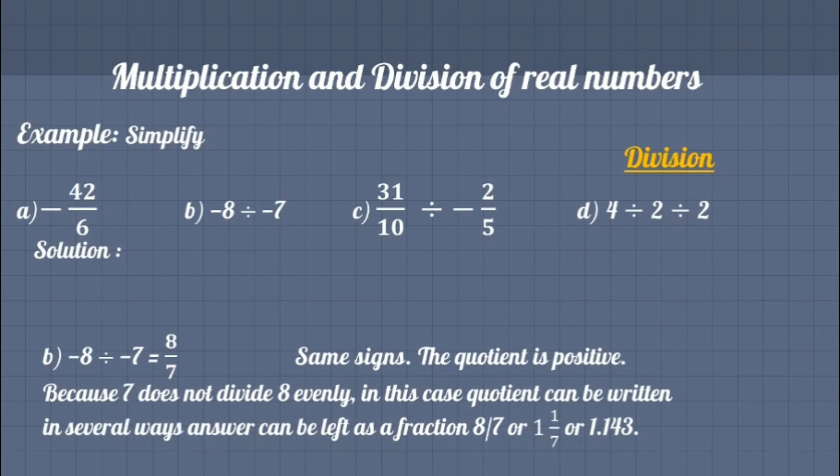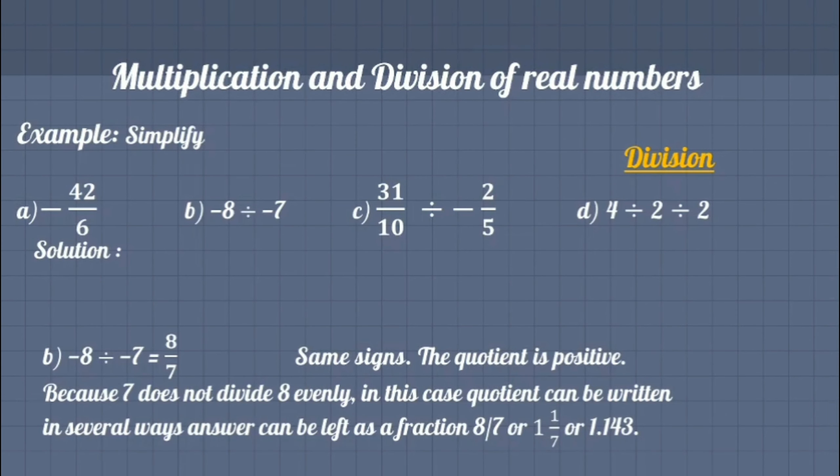If divisor does not divide evenly, in this case we have several options to write the quotient: leave the lowest simplified fraction as it is, or make mixed fraction, or simply write the answer in decimal place.